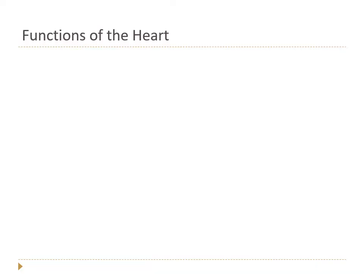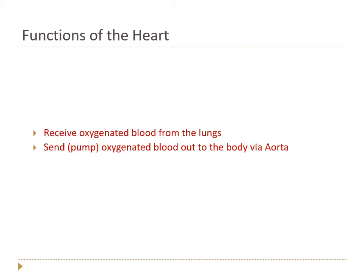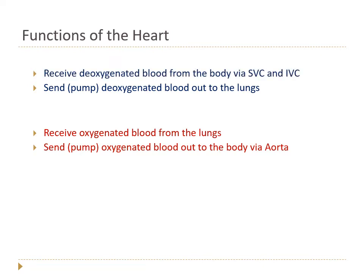Let's talk about the heart. When we think about the functions of the heart, people say it pumps blood — and yes, absolutely. But let's be more precise. One big job of the heart is to pump oxygenated blood out to the body via the aorta. But it also has to receive that oxygenated blood from the lungs. And in order to get oxygenated blood from the lungs, we have to send blood out to the lungs, and to do that, we receive deoxygenated blood from the body via the superior vena cava and the inferior vena cava.